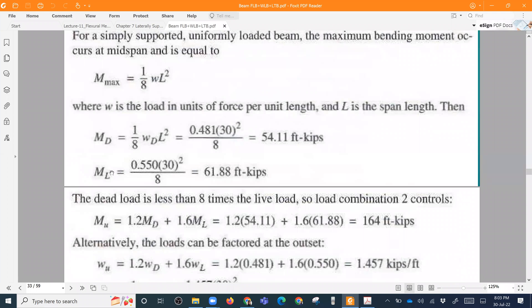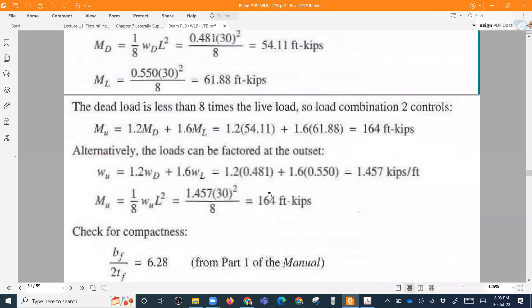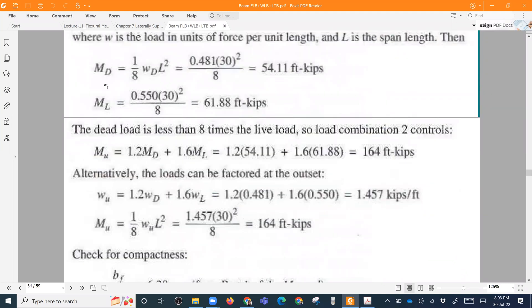Otherwise, we can find the ultimate load 1.2 times dead load and 1.6 times live load. That is the ultimate load. And we can find out the moment wL squared by 8. So in both cases, whether we find the dead load moment, live load moment first and multiply the dead load moment with 1.2 and live load moment with 1.6, even in both cases, the ultimate moment will be same.